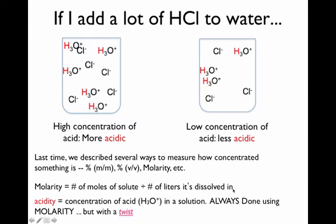That's the formula for molarity. For acidity — how concentrated the acid is in a liquid — the concentration when describing acidity is basically just describing how concentrated the amount of H3O+ is in your liquid. This is an indirect way of measuring how much acid you put into your liquid. Measuring acidity is almost always done using the molarity method.